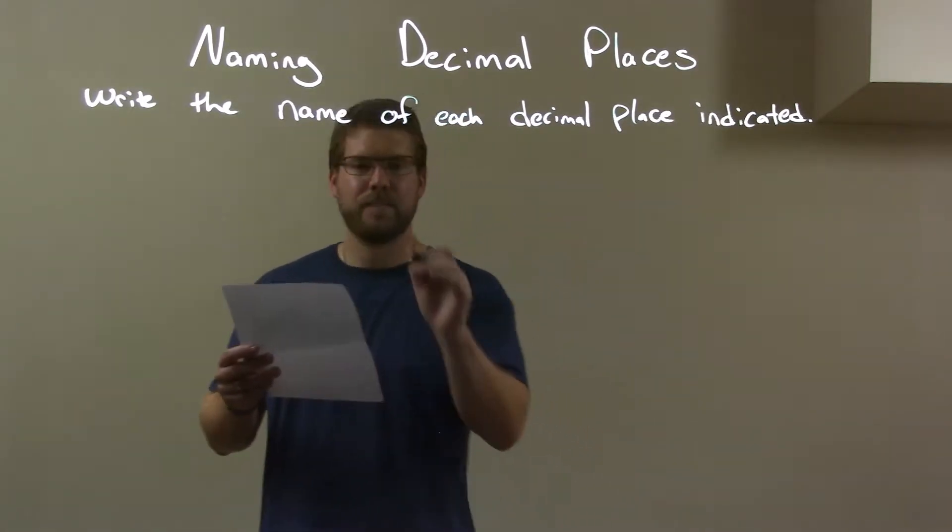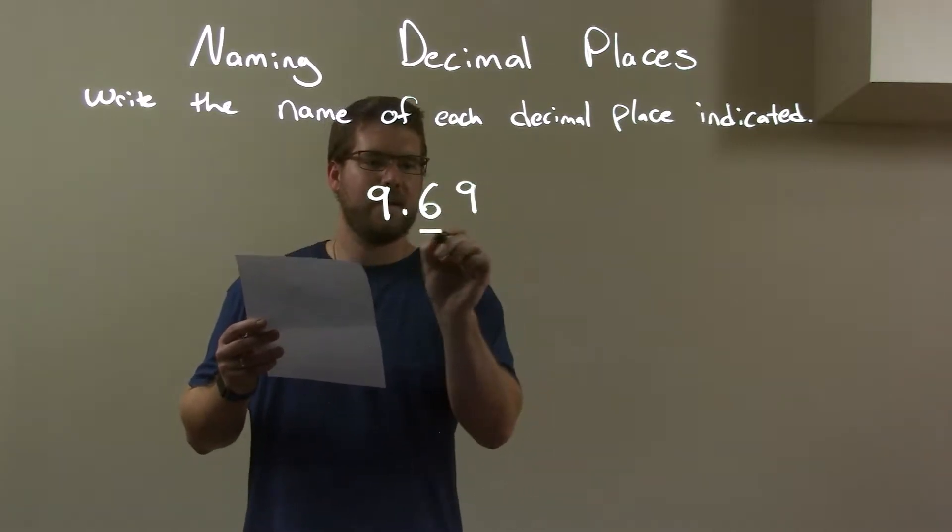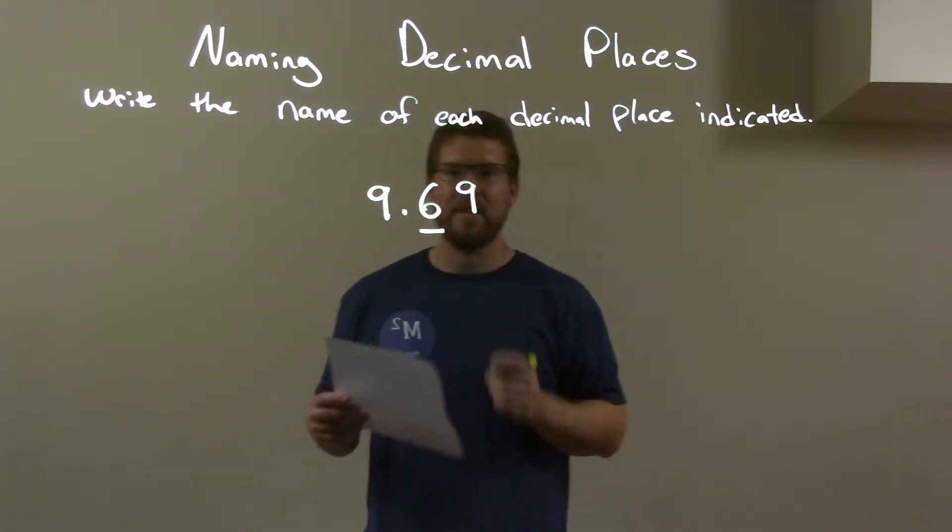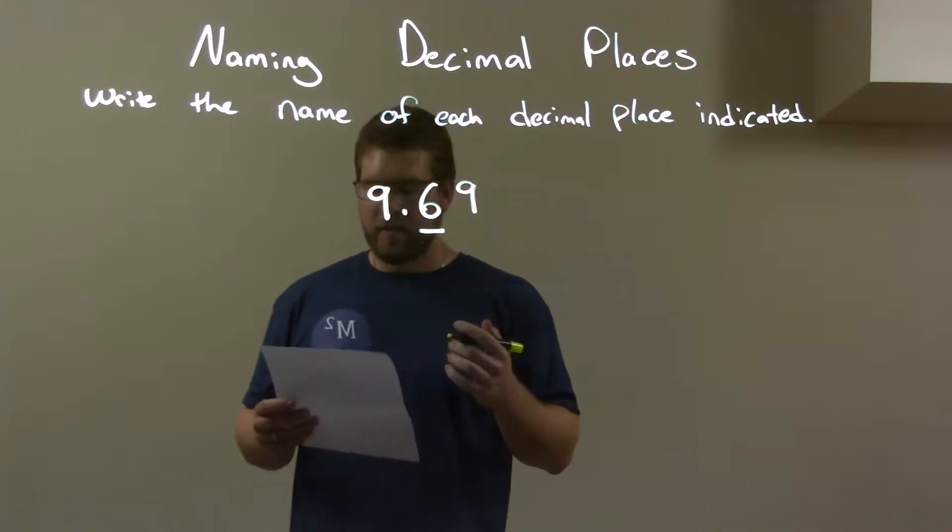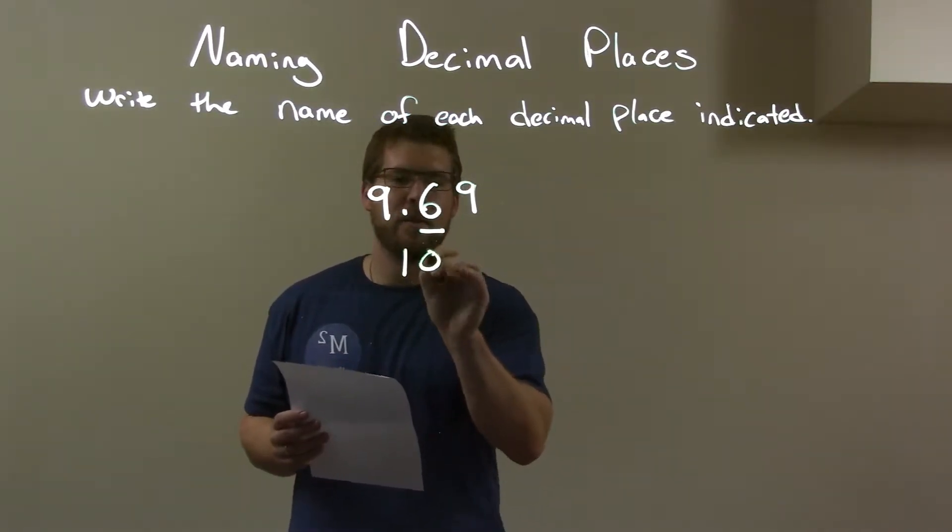So if I was given this number, 9.69, and right there that 6 is the number that's indicated. Well, my technique right here: I put a 1 where the decimal is and put a 0 until the number indicated.